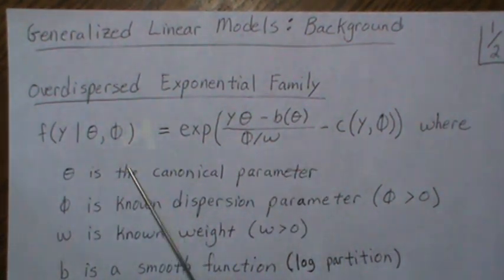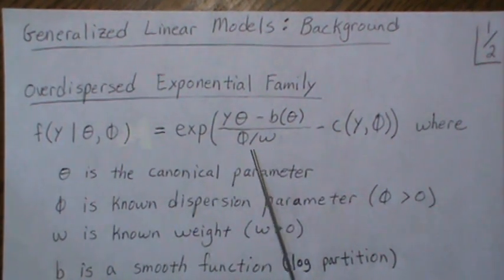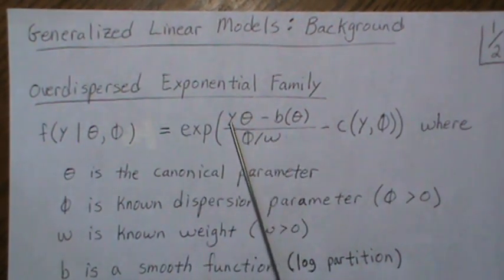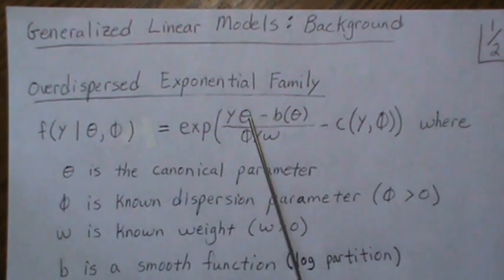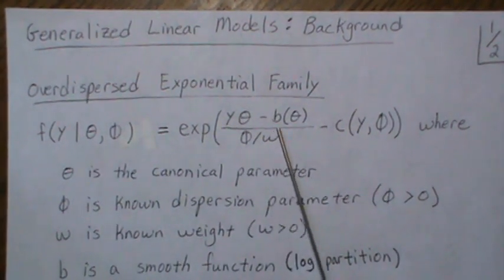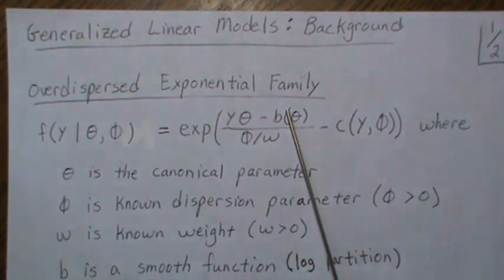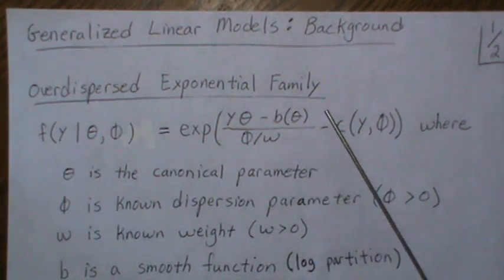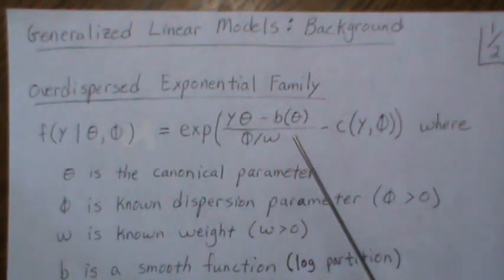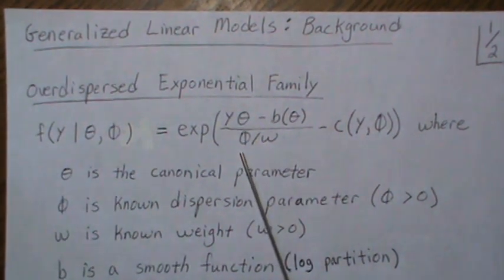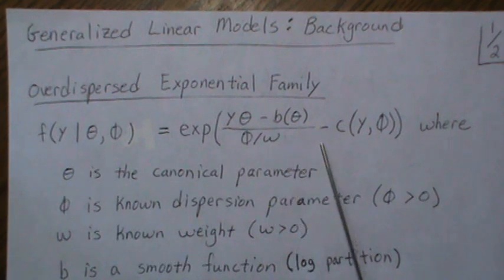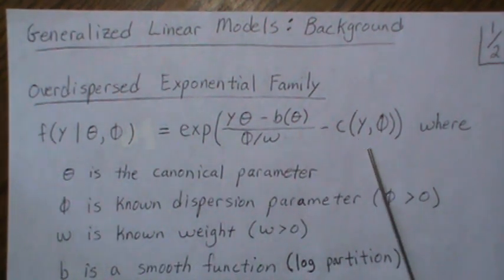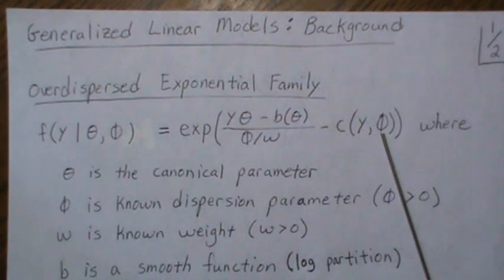In here it's the exponential of this expression: y is our data, theta is our canonical parameter, and B is what's called a log partition — a smooth function whose derivatives exist. Phi is a dispersion parameter, w is a known weight, and C is just a function of y and phi.